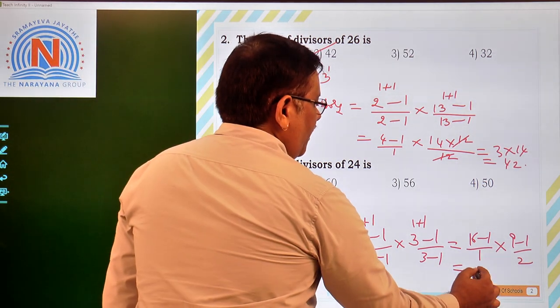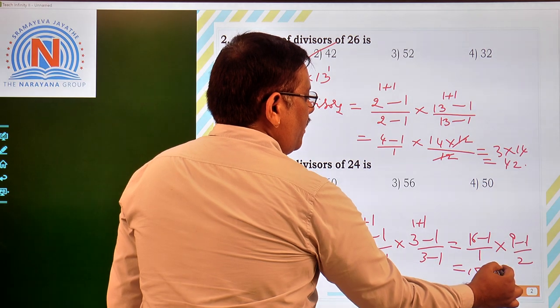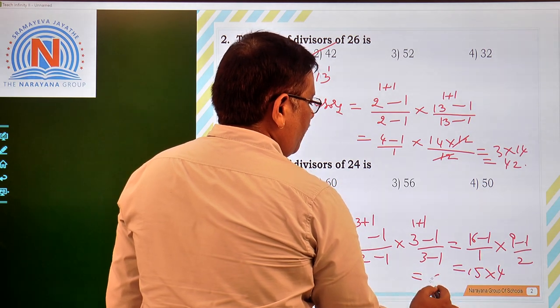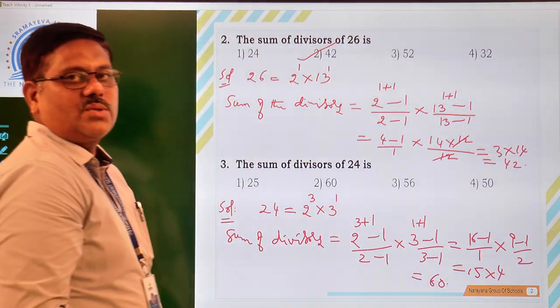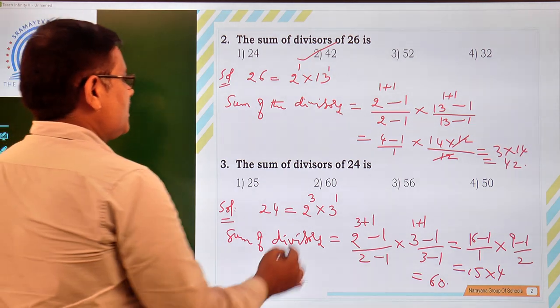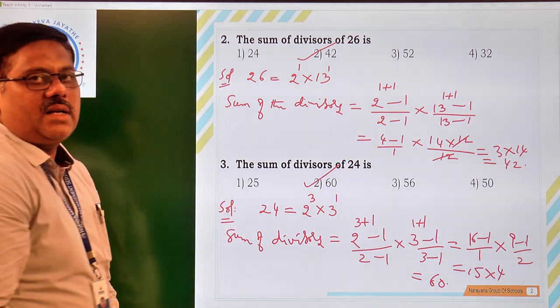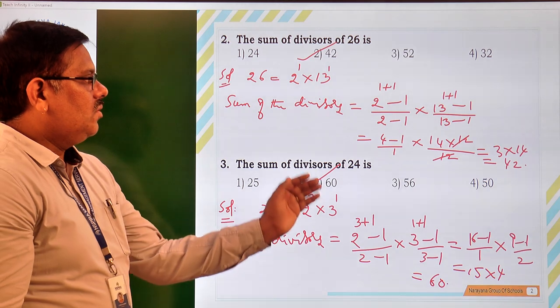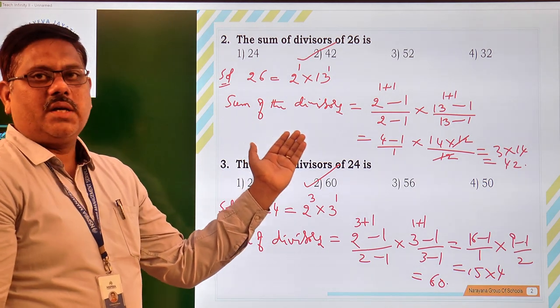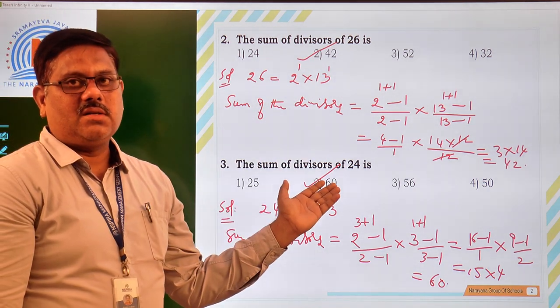So that is going to be 16 minus 1 is 15, 15 into here 8 by 2, that is 4. So, 15 times 4 is 60. So, sum of the divisors of 24 is nothing but 60, that is the second option. This is what today we have studied, sum of the divisors.